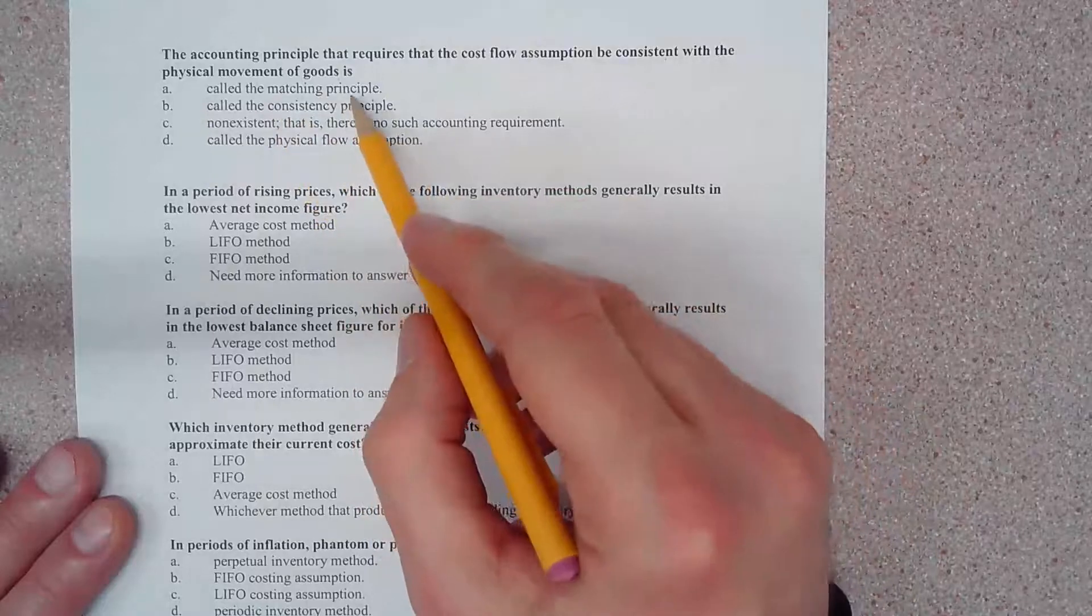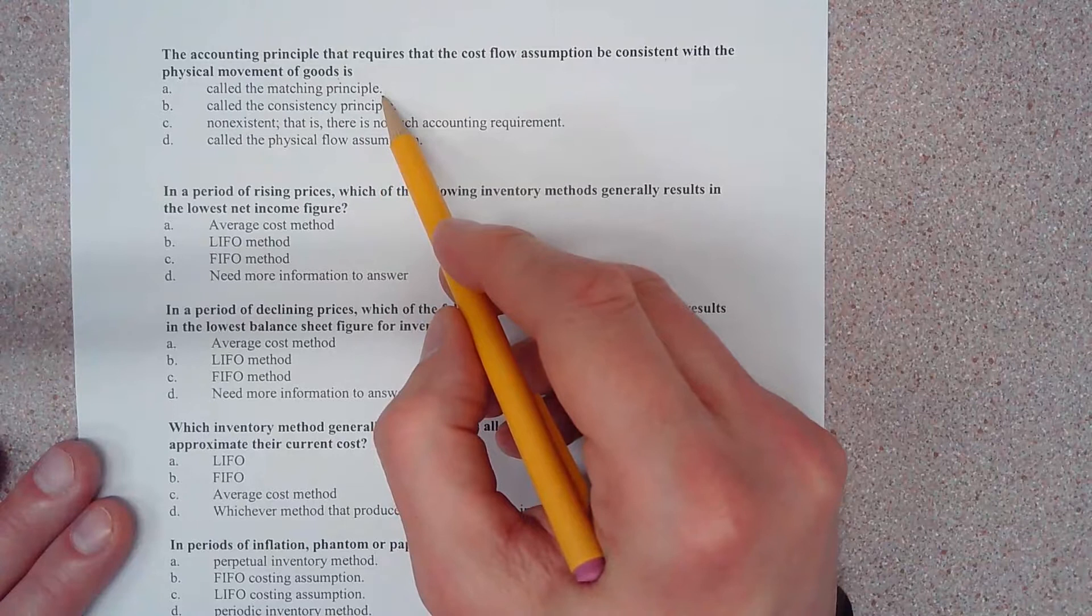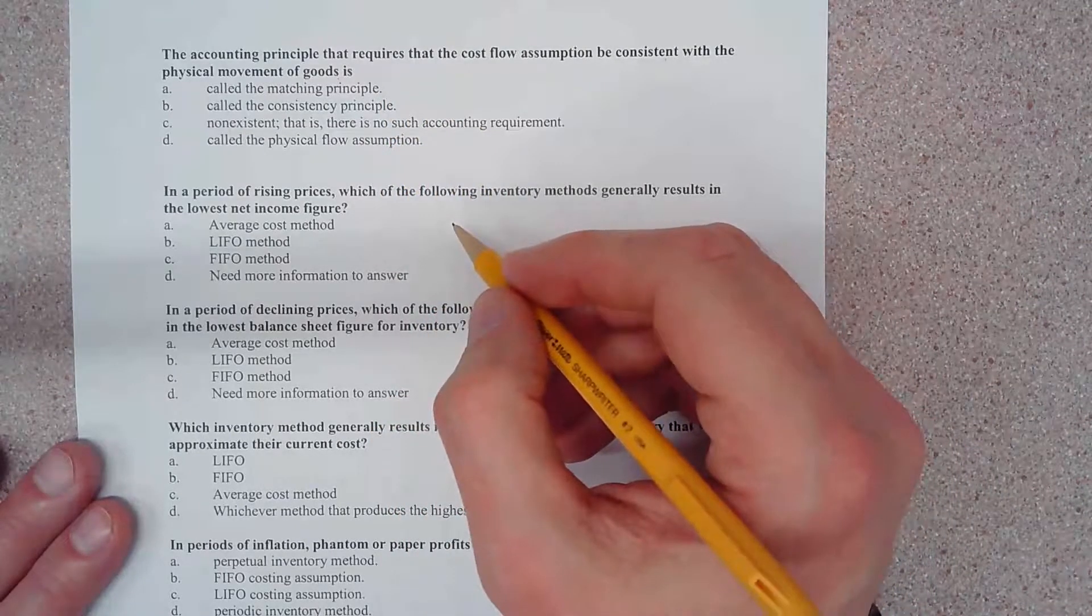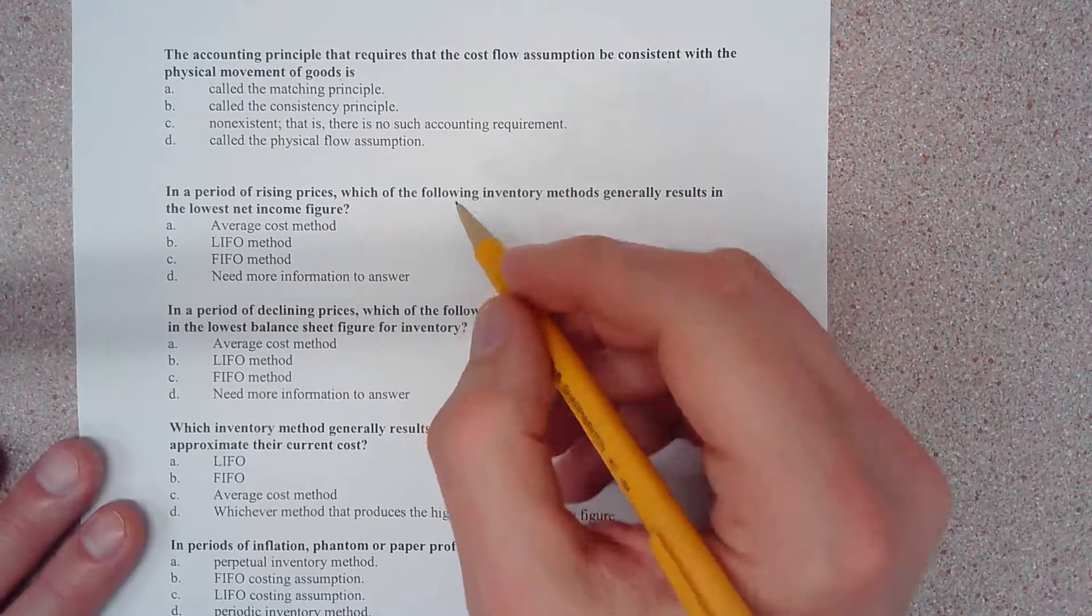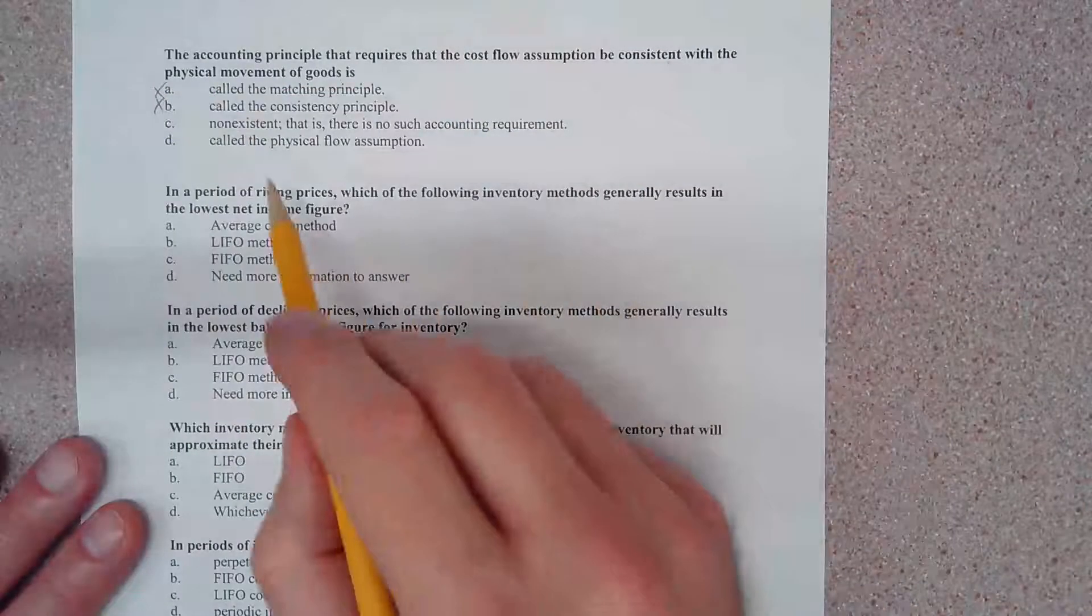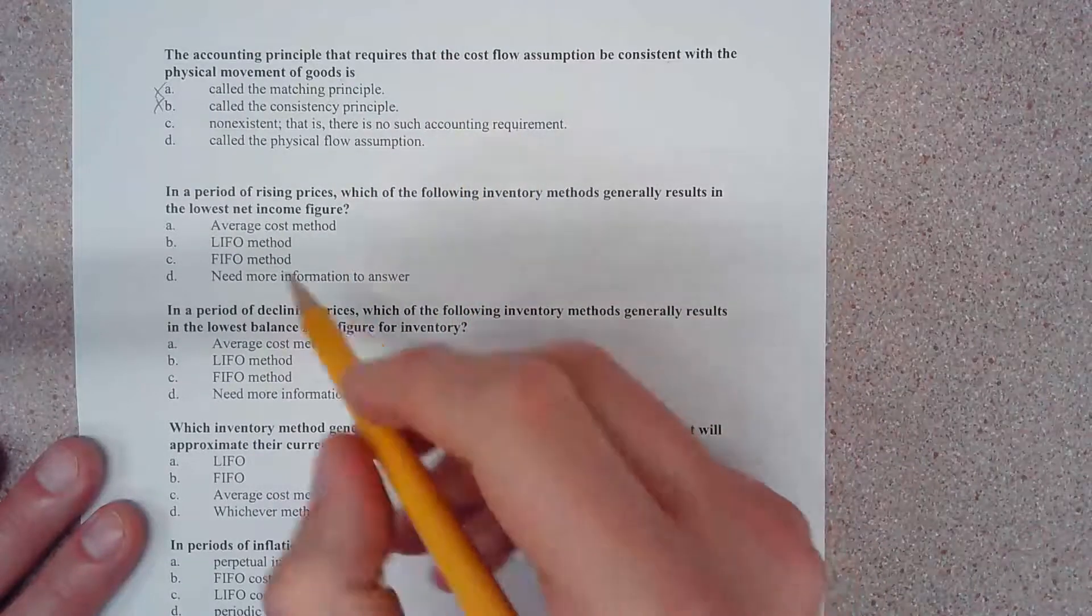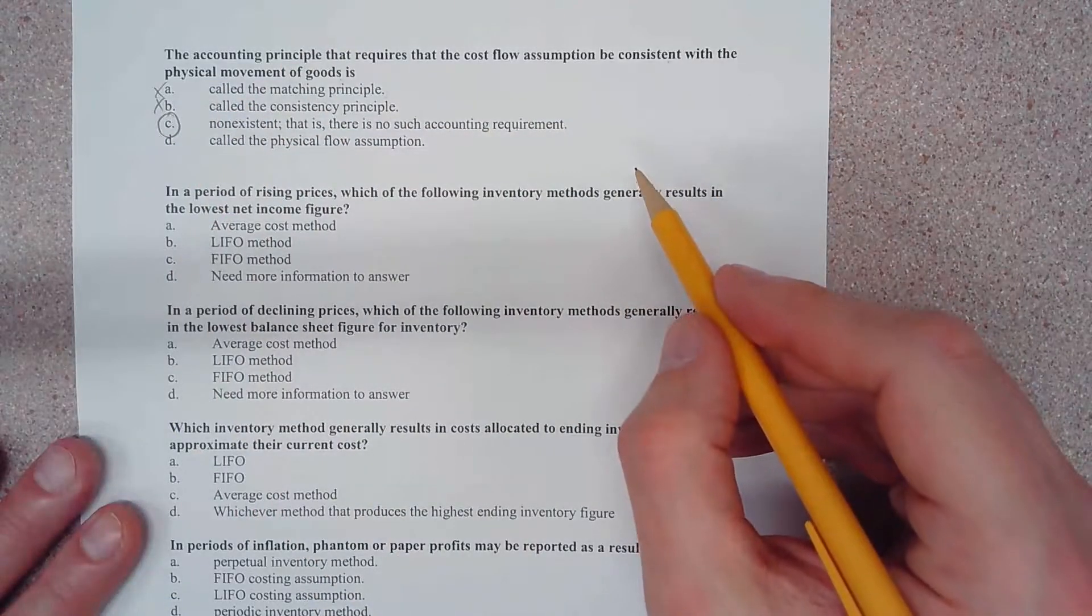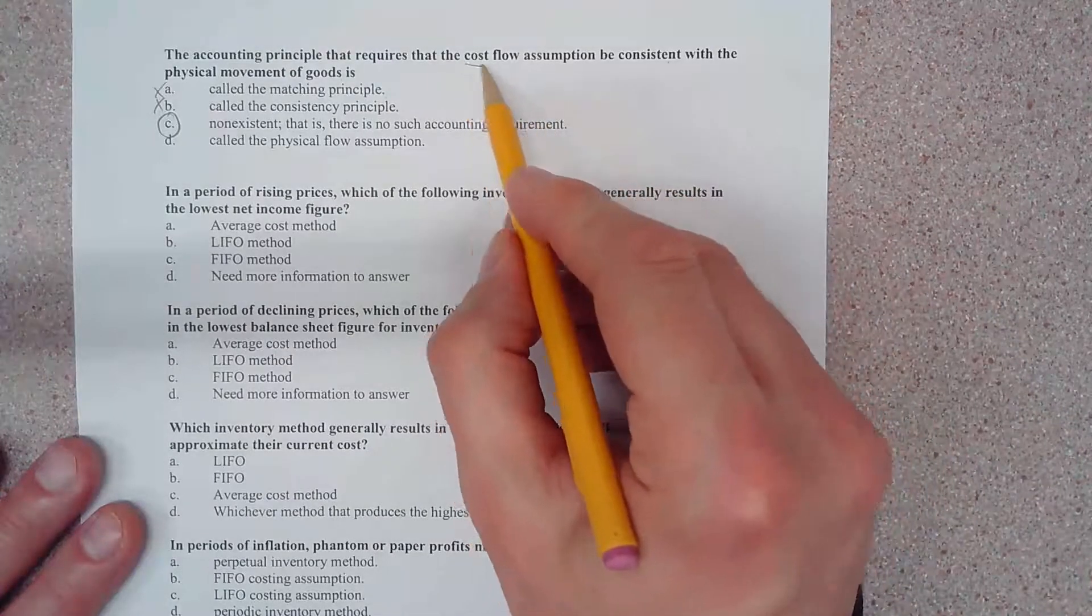It says the matching principle. Well, the matching principle is an accounting principle, but that deals with expense and revenue recognition and timing, those sorts of things. Consistency is actually not an accounting principle, so we have two wrong answers so far. Here we go: non-existent. There is no such accounting requirement. This is going to be your correct answer.